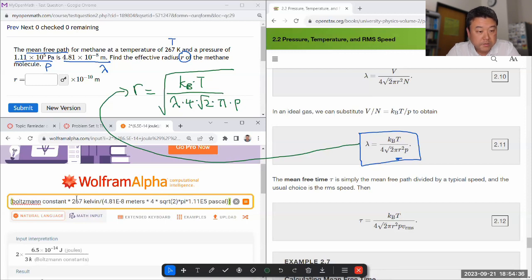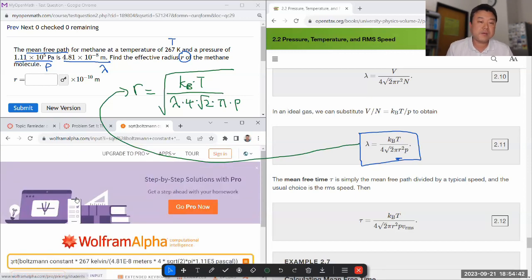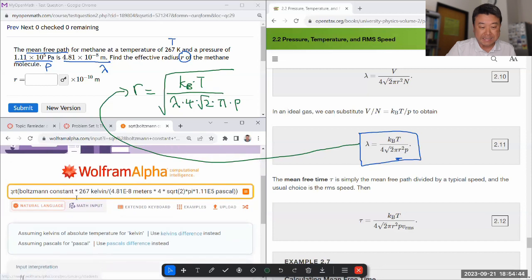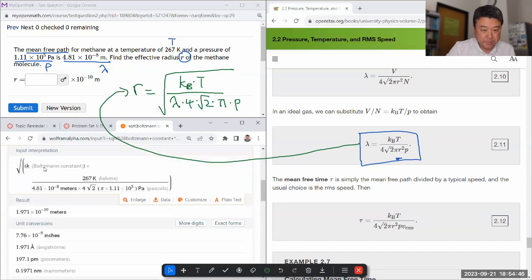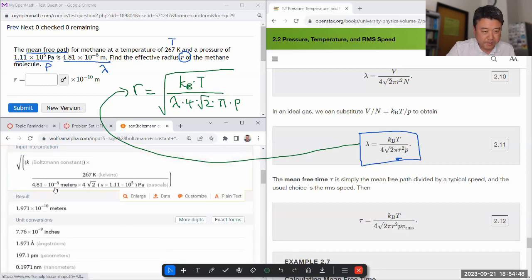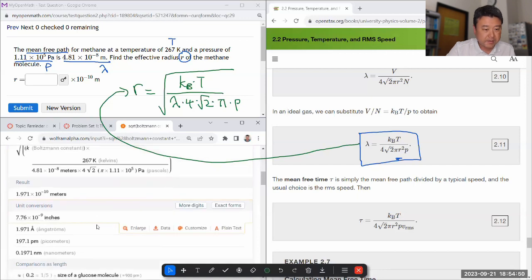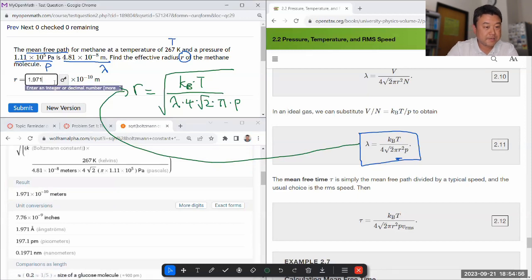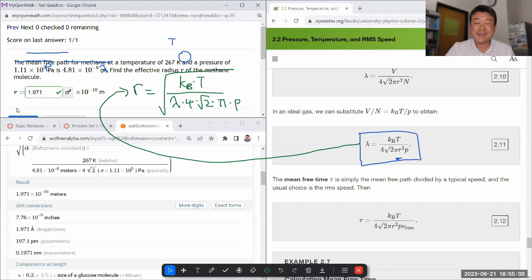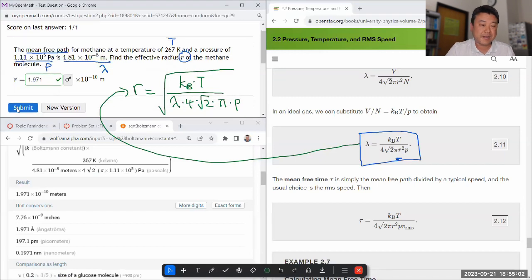I think that's it. If I made any mistake other than any unitless quantities, I'll be able to notice it by looking at the unit. Looks like it understood me correctly. I'm given an answer in meters—good. 10 to the power of minus 10—good. So 1.971 times 10 to the power of minus 10 meters.